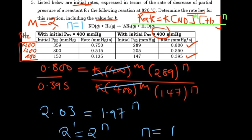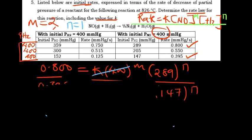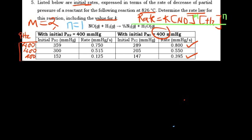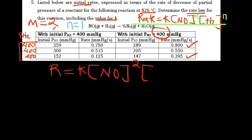We found the reaction order with respect to both reactants using the data in the table. Our rate law will be: R = K[NO]²[H₂]¹. The order with respect to nitrogen oxide was found to be 2, and with respect to hydrogen it was found to be 1. Now we have to find the value of K.